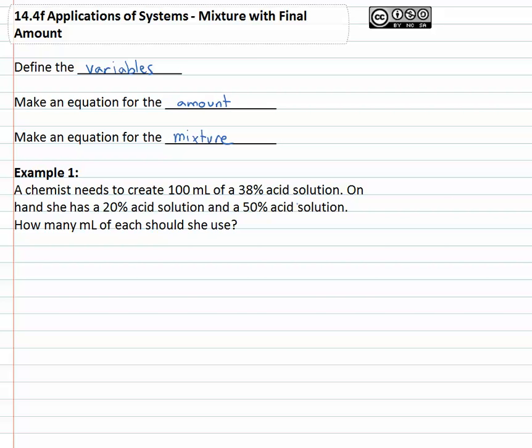So if a chemist needs to create a hundred milliliters of a thirty-eight percent acid solution, this is the final goal, this is the final solution. On hand, she has twenty percent and fifty percent that are going to be mixed together.